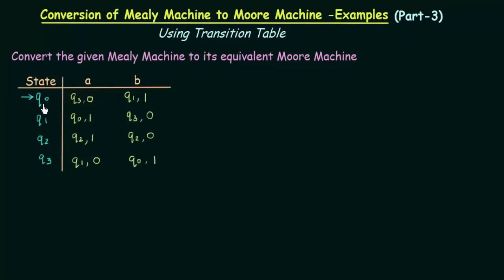Let's start with state q0. Search for q0 in this column and in this column and find out what outputs they give. q0 here is giving output 1, and in this column q0 is also giving output 1. So q0 is giving the same output in both columns. So you can leave q0 as it is and come to state q1.